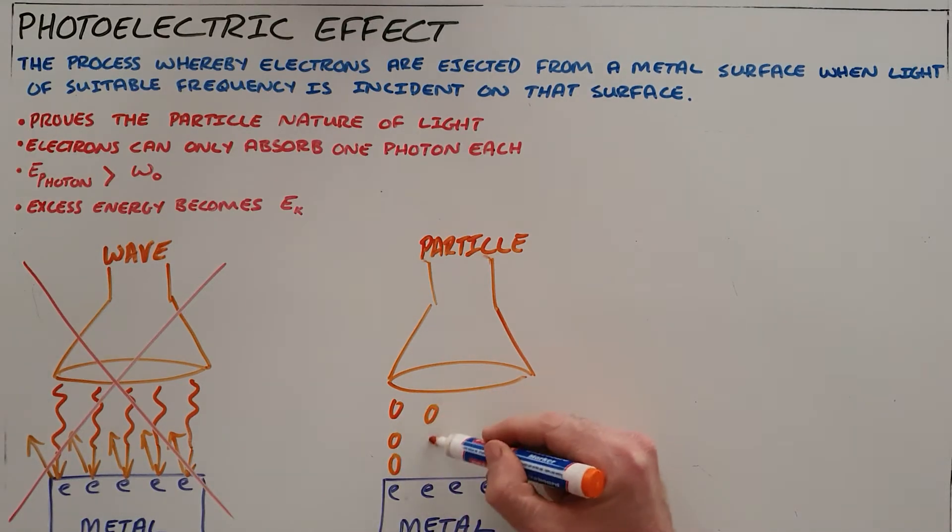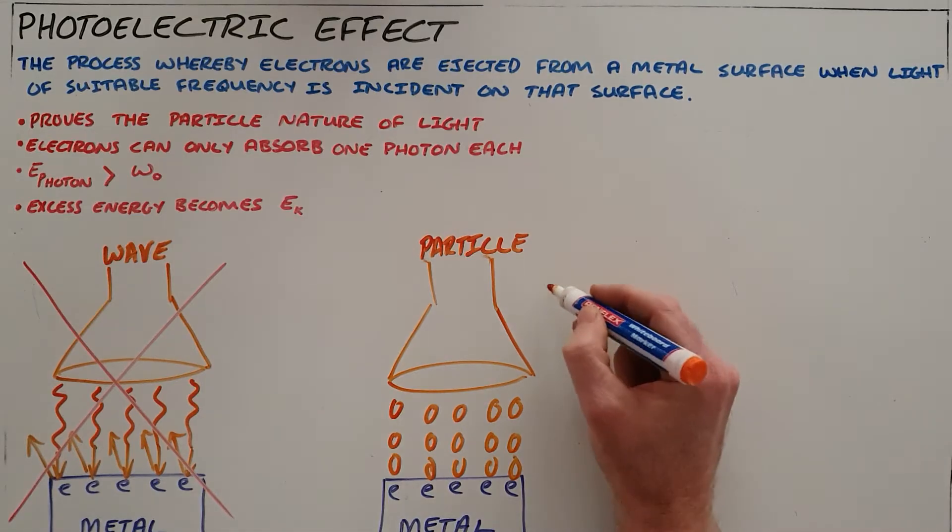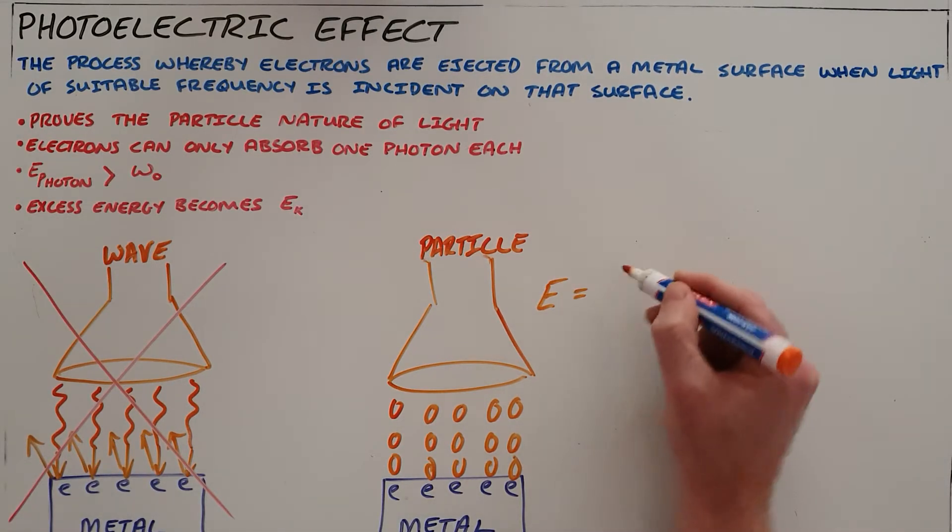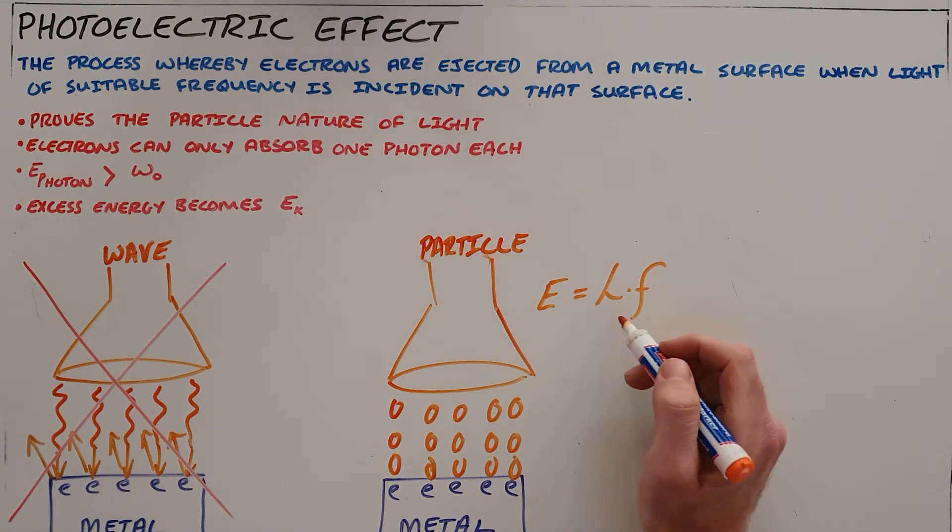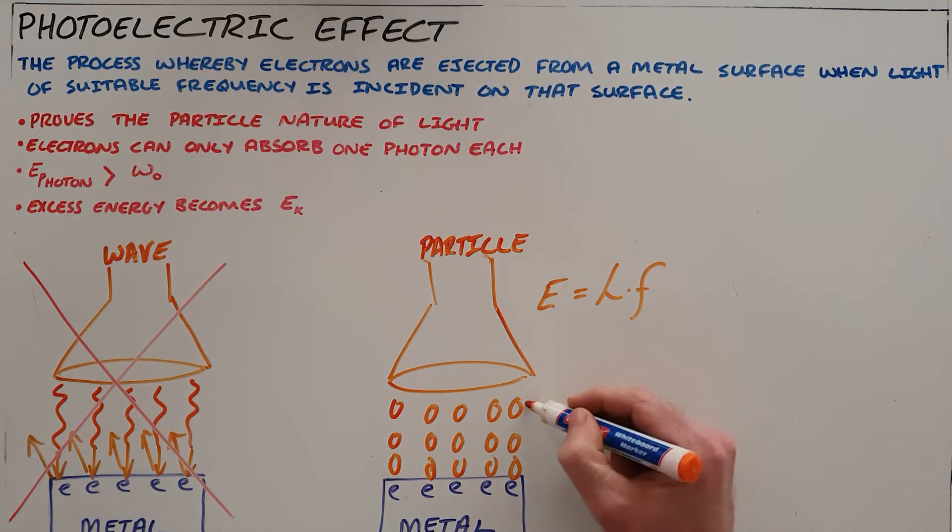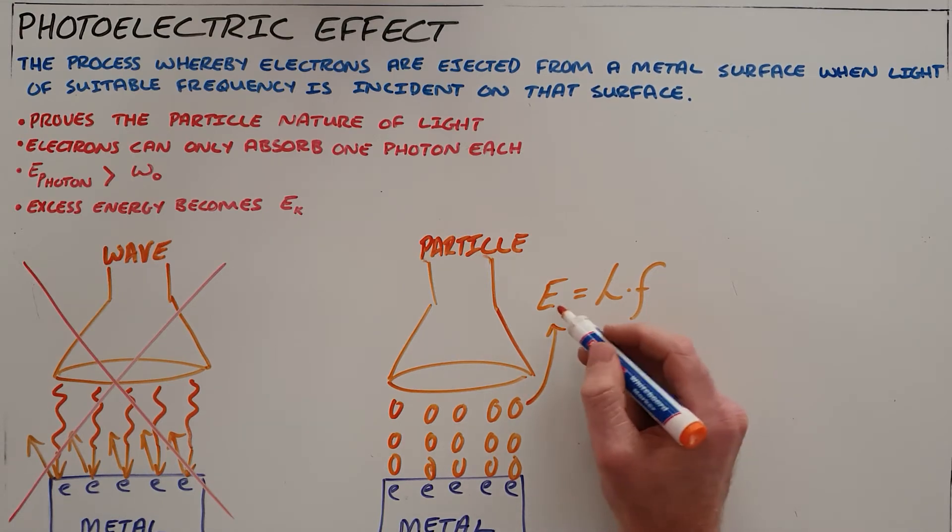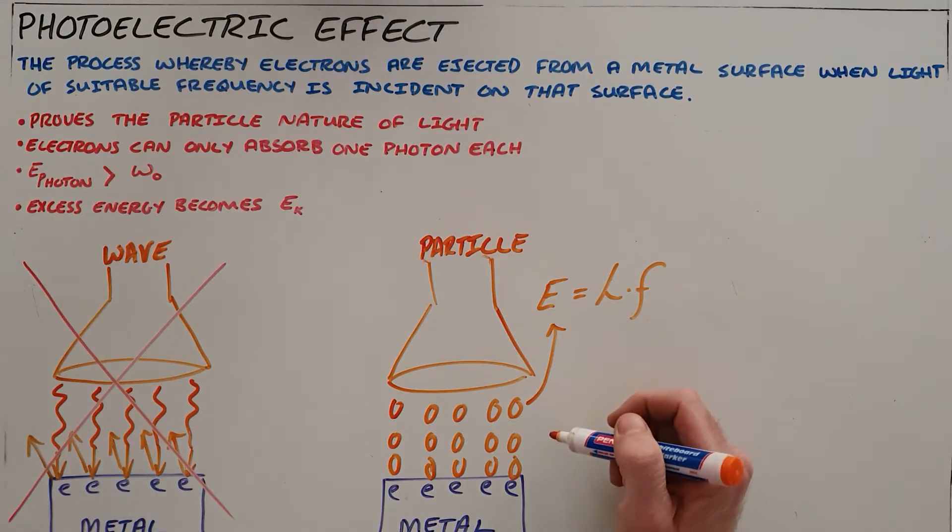We know that each of those particles contains a specific energy and that energy is a function of the frequency of that light. We remember that H is Planck's constant, and so the energy of any one photon is determined by the product of Planck's constant and the frequency of that light source, E = hf.